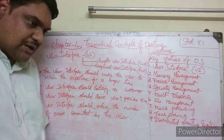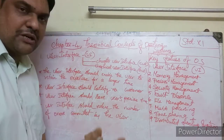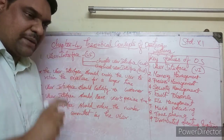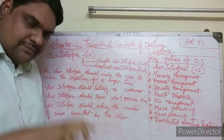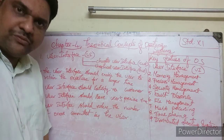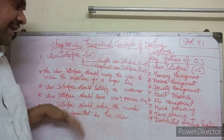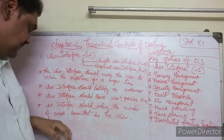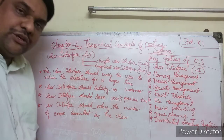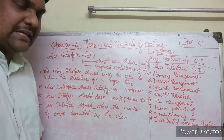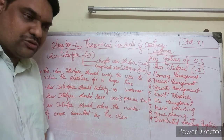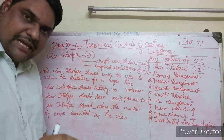The user interface should help customers work faster. In the Character User Interface you have to type commands, but in the Graphical User Interface you just click the mouse button, so time is saved. The user interface should also reduce the number of errors committed by the user.